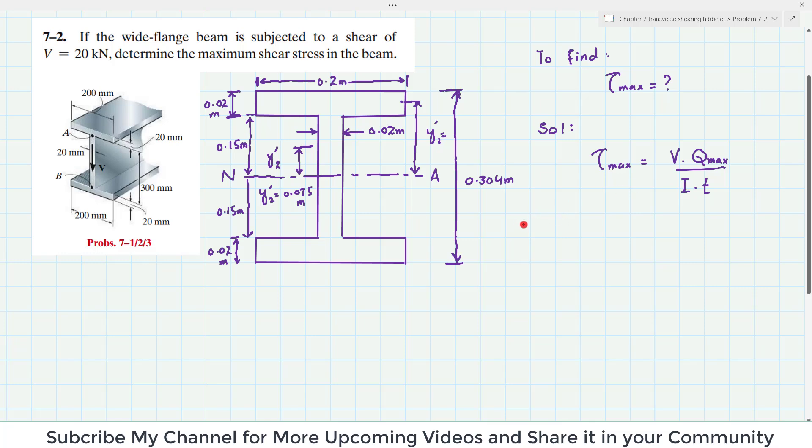So for that we have to find this first. First of all we will find the moment of inertia I for the whole section. And that is equal to, if you consider this whole as rectangular box, this whole as a rectangular box.